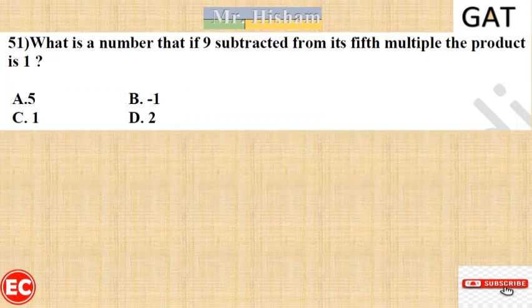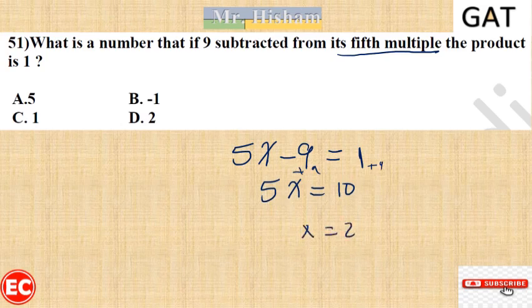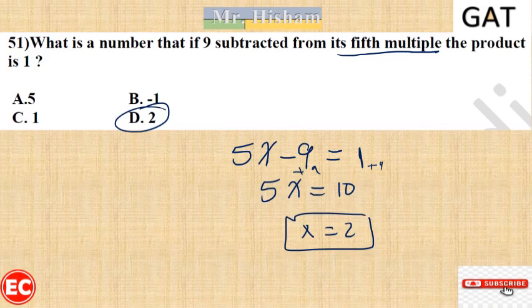Question 51: What is the number if 9 is subtracted from its fifth multiple? We set up 5x minus 9 equals 1. After adding 9 to both sides, 5x equals 10, so x equals 2. Alternatively, you can plug in the answer choices: multiply by 5, subtract 1, and check which gives 9. The answer is 2.